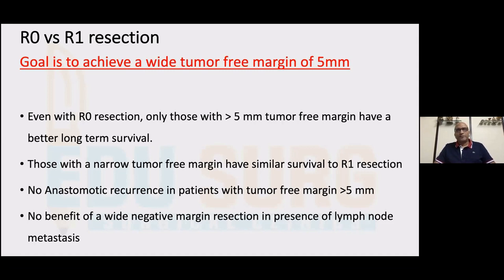There are times when a tumor-free margin does get compromised. The question is: do we send these ductal margins for frozen section? We often try and do it, but sometimes a lot of dysplasia makes interpretation varied. And there are times when you just can't go beyond a particular point — you can't go more proximally on the duct because you will not have adequate effluent remaining. So at times, it's almost impossible to get a 5 millimeter margin.